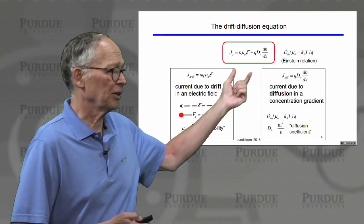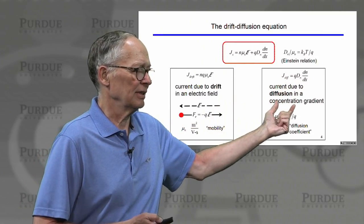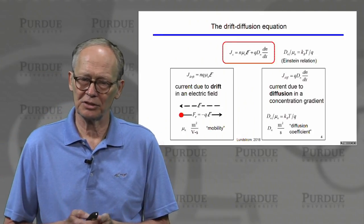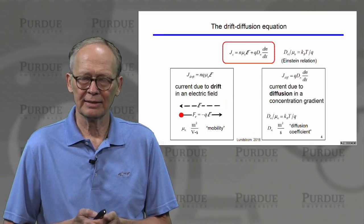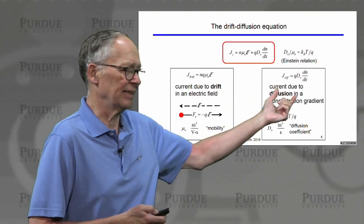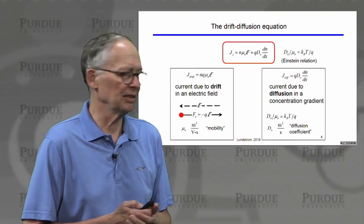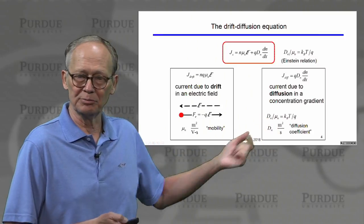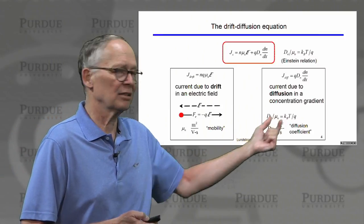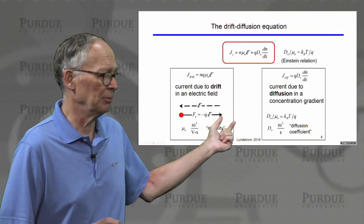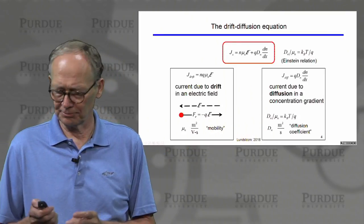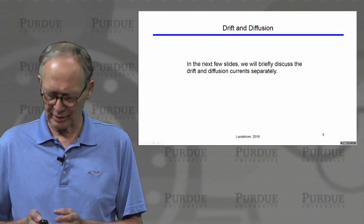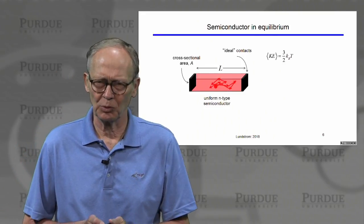Electrons will acquire a velocity, and the speed with which they move is proportional to the mobility, so we call that component the drift current. The other part is a diffusion current, due to the diffusion of electrons in a concentration gradient. This has nothing to do with their charge — there is no force. It's random thermal motion causing the electrons, as any particles would, to diffuse down a concentration gradient, described by the diffusion coefficient, which has units of m²/s and is intimately related to the mobility.